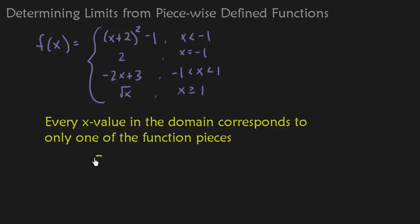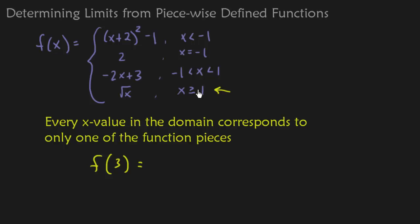So if I said what is f(3), you don't plug 3 into every single one of these. You find where 3 is, which is the piece where x is greater than or equal to 1. So you would use the square root of x, and that would be the square root of 3.